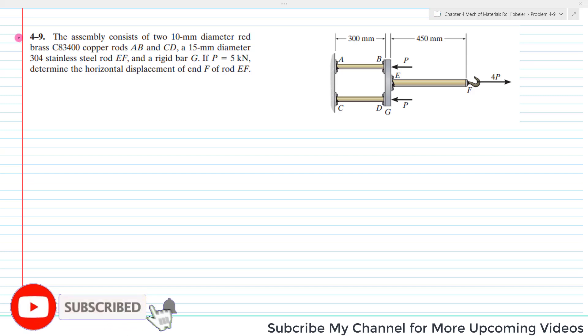Hello and welcome back. Problem 4-9. In this problem it is given that the assembly consists of two 10 mm diameter rods, C-83-400 copper rods AB and CD.